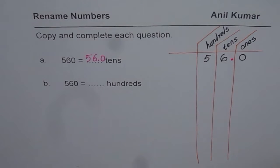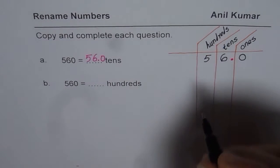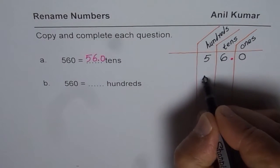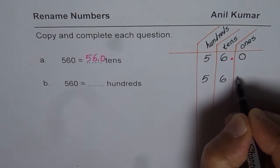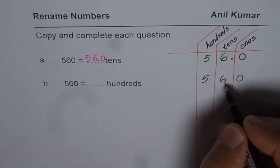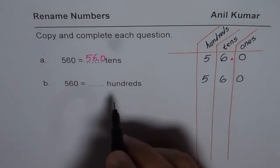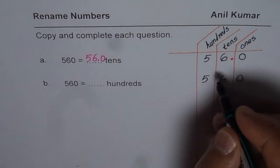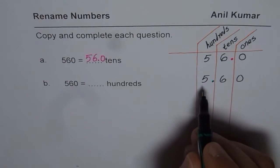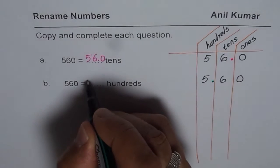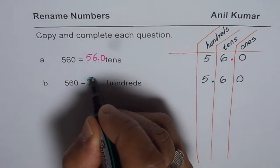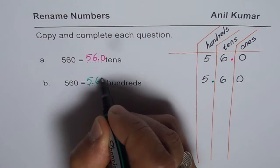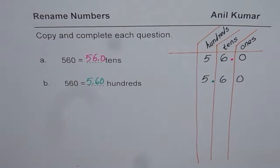Let's do the next one. 560, let me rewrite this number 560 here. 5 in hundreds place, 6 in tens, 0 in ones. We are interested in hundreds. So where will the decimal go? Decimal will go in this column with hundreds. So it is 5.60 or you can write here 5.60 hundreds. That is how we can rename these numbers.